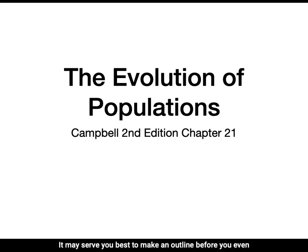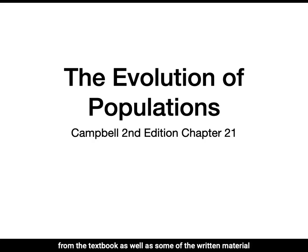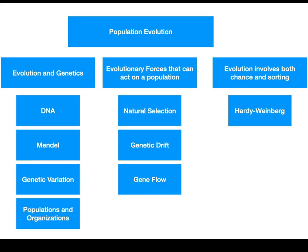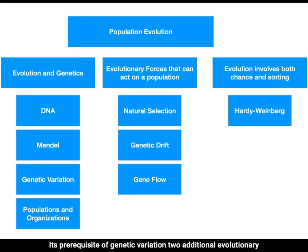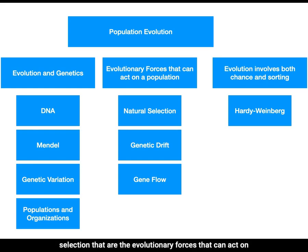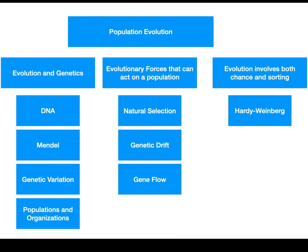It may serve you best to make an outline before you even listen to the lecture, and this outline could include notes from the textbook as well as some of the written material that's already present on the slide. In this lesson, we are going to look at the process of evolution, its prerequisite of genetic variation, two additional evolutionary forces — genetic drift and gene flow — along with natural selection, that are the evolutionary forces that can act on a population. Finally, we're going to describe how evolution can be detected and measured using the Hardy-Weinberg equation. But first, let's dig into some background on evolution and genetics.